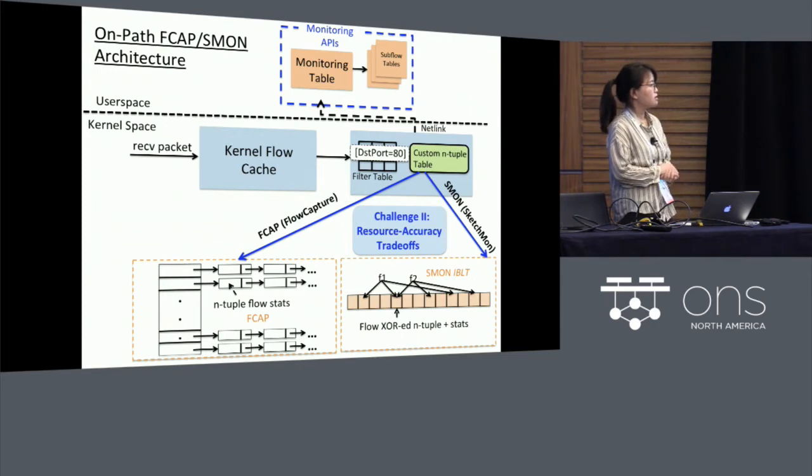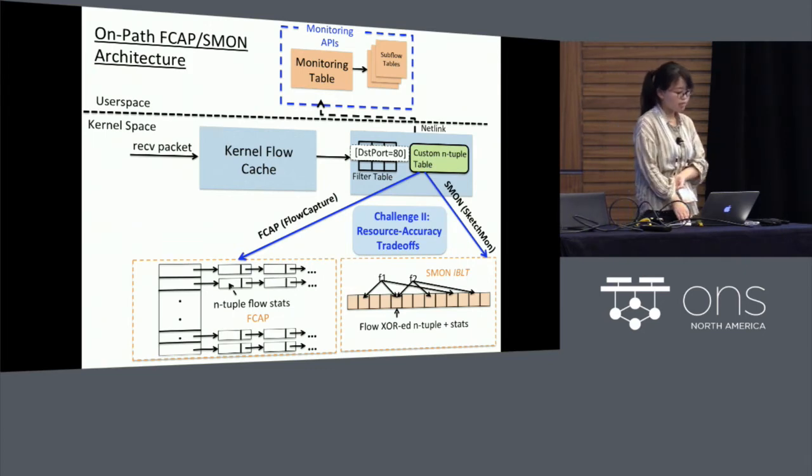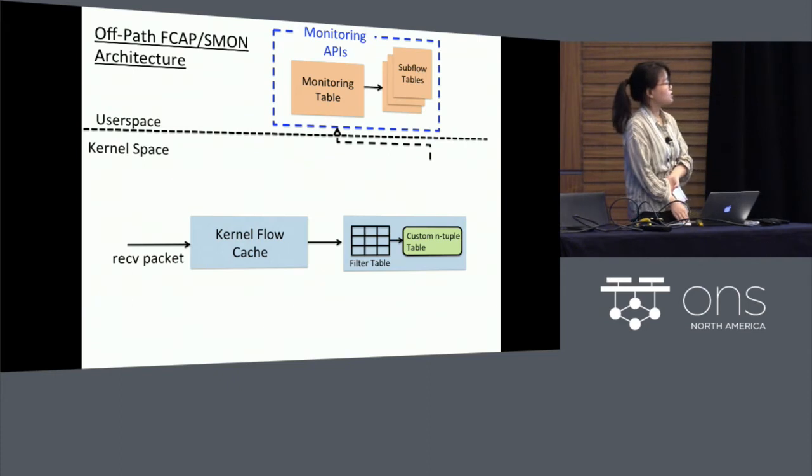So intuitively, the placement of the monitoring function on the same path of the forwarding pipeline may introduce extra processing delay to the forwarding path. So we consider this issue and further propose a buffering mechanism in order to take the monitoring function off the forwarding path.